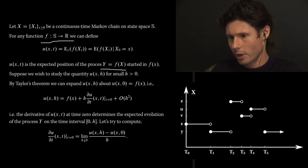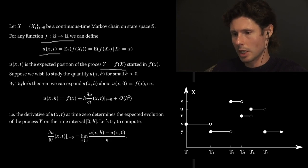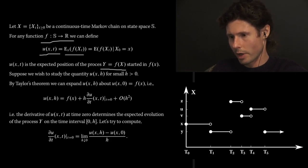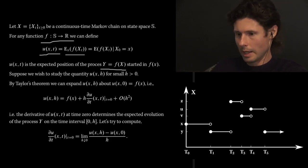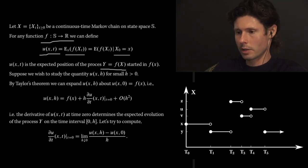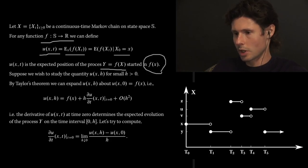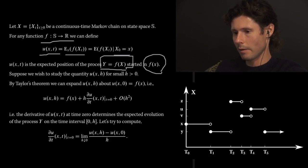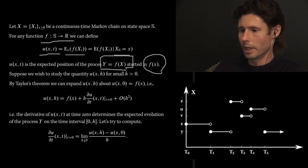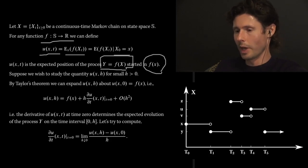We're going to track y using this function. We're going to look for the process in expectation — the expected value of process y at some time t down the road, given that the chain started in x. So when chain X starts in little x, y starts in f(x). Think of f as the identity function, in which case y equals x. This gives you flexibility: x might be some underlying physical phenomenon and f is your model for particular behavior you want to study.